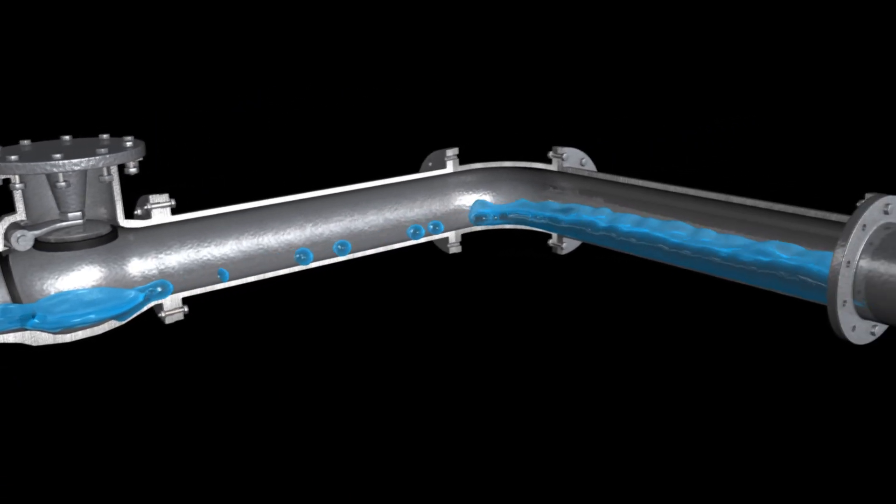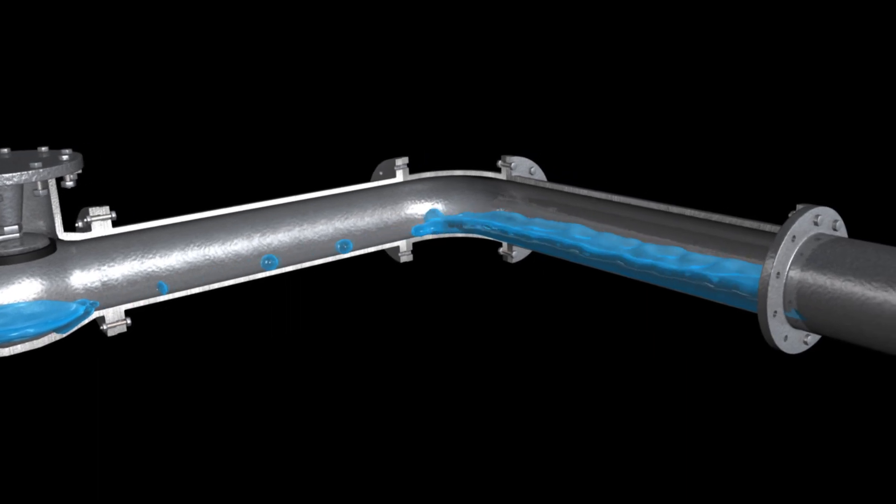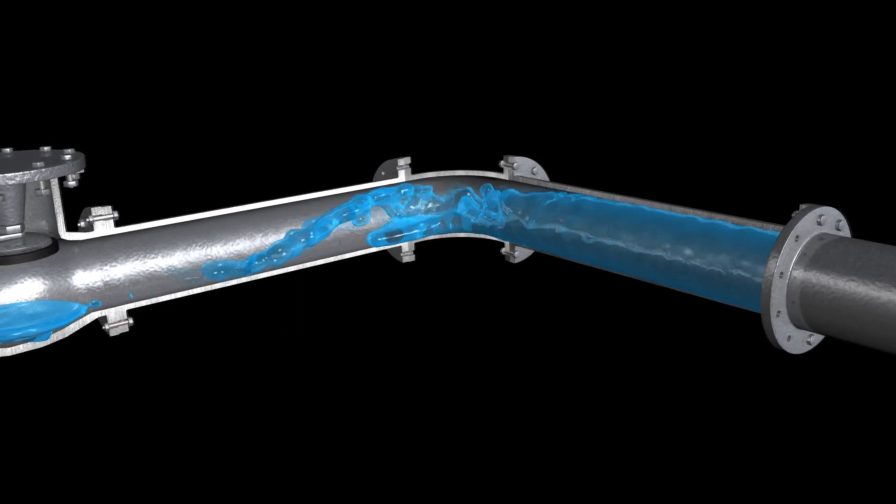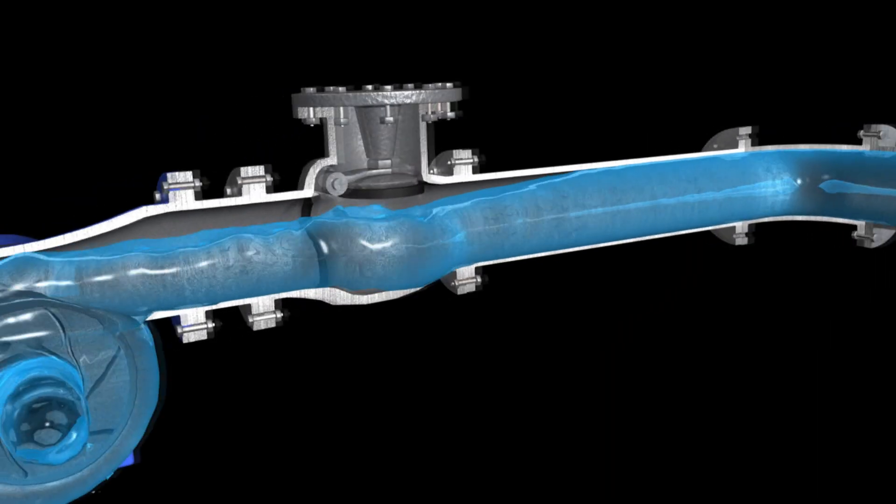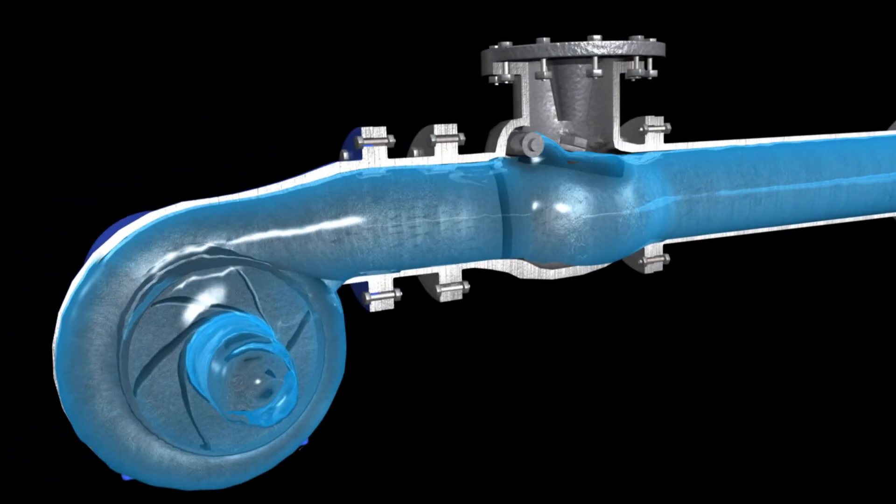Without the pump, the fluid flow now reverses direction and picks up speed until the vapor created by the column separation almost instantly collapses.